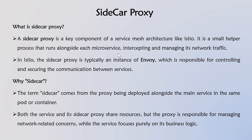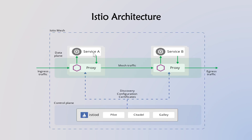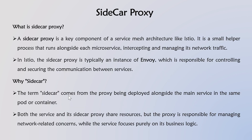What is a sidecar proxy? A sidecar proxy is a key component in a service mesh architecture like Istio. It is a small helper process that runs alongside each microservice, intercepting and managing its network traffic. In Istio, the sidecar proxy is typically an instance of Envoy, responsible for controlling and securing service-to-service communication. The term 'sidecar' comes from the proxy being deployed alongside the main service in the same pod or container. Both the service and its sidecar proxy share resources, but the proxy manages all network-related concerns while the service focuses purely on its business logic.